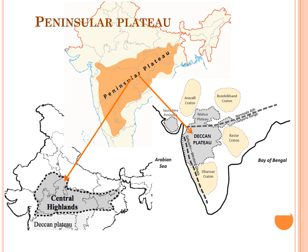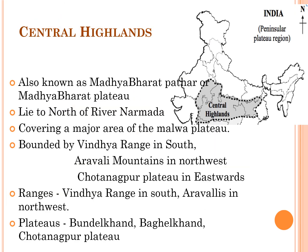River Narmada divides the Peninsular Plateau into Central Highlands in the north and the Deccan Plateau in the south. Central Highlands — this area consists of some of the oldest rock formations and is also known as the Madhya Bharat Patar or Madhya Bharat Plateau.